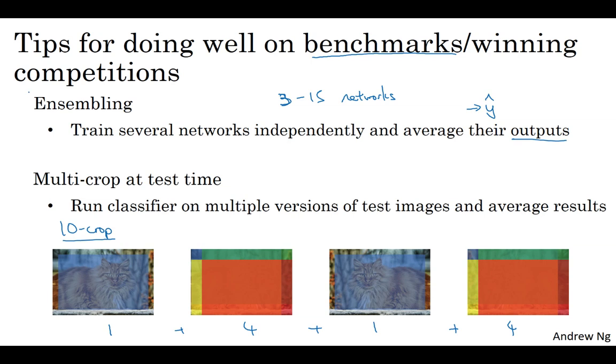but this is another technique that is used much more for doing well on benchmarks than in actual production systems. And one of the big problems of ensembling is that you need to keep all these different networks around, and so that just takes up a lot more computer memory. For multi-crop, I guess at least you keep just one network around, so it doesn't suck up as much memory, but it still slows down your runtime quite a bit.